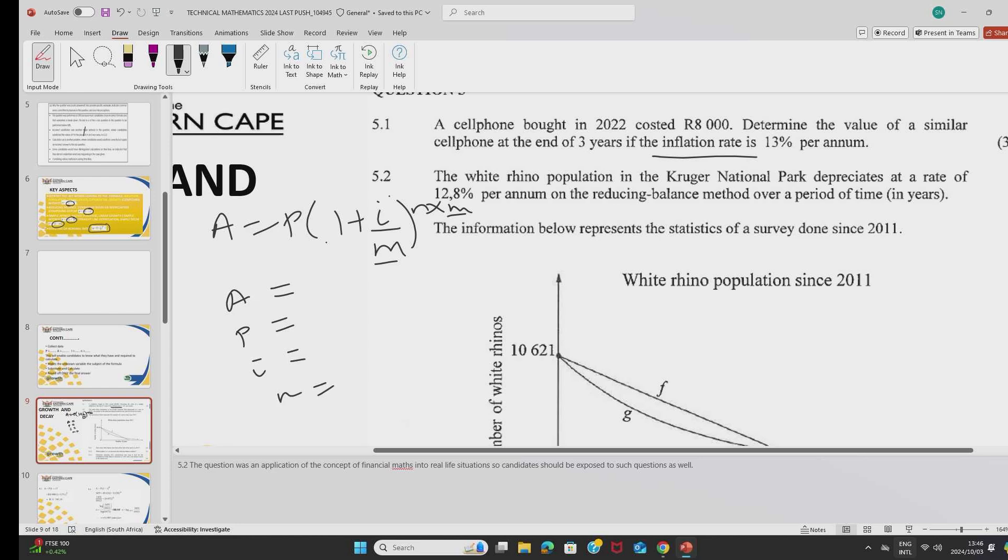So in this problem, you want to fit into the terms A, P, I and N. Then the cell phone was bought in 2022. It costed, so initially it costed R8000. And then now the question says, calculate the cell phone, the similar cell phone at the end of three years. So number of years, it's over three years. Then the inflation rate is 13% per annum, which means our I is 13%. We all know you divide by 100, and then you get 0.13.